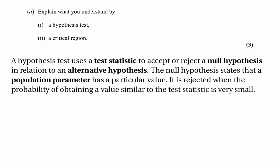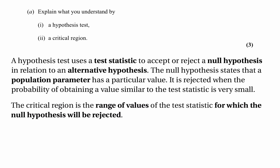A hypothesis test uses a test statistic to accept or reject a null hypothesis in relation to an alternative hypothesis. The null hypothesis states that a population parameter has a particular value, and it's rejected when the probability of obtaining a value similar to the test statistic is very small. The critical region is the range of values of the test statistic for which the null hypothesis will be rejected.